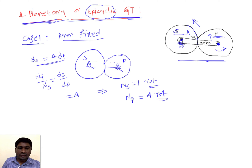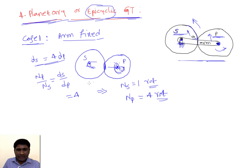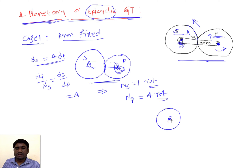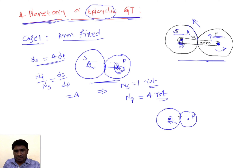If n1 is given one rotation, then nP is having four rotations. That means when the gear is rotating, the shaft is rotating as well. If I sit on the shaft, I will make four rotations. The same case can be viewed like this: S is now fixed, and what I do is I revolve P on the surface of S without slip.